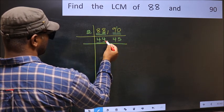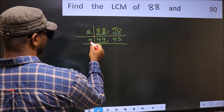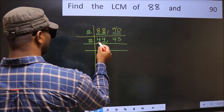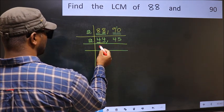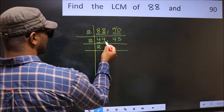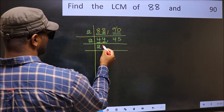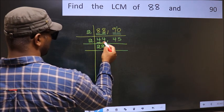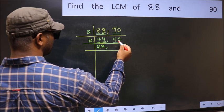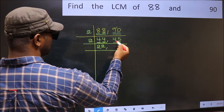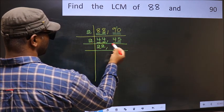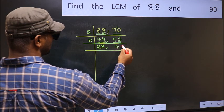Now here we have 44, last digit 4 is even, so take 2. First number 4, 2 times 2 is 4. The other number 4, 2 times 2 is 4. The other number 45, last digit 5, not even, so not divisible by 2. Write it down as it is.